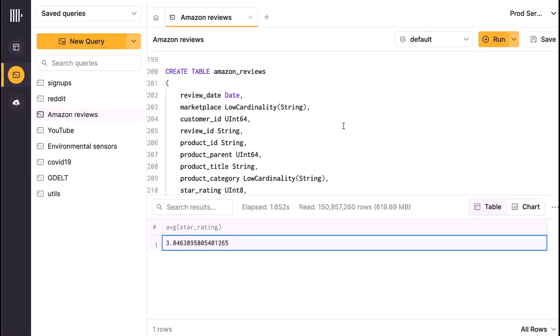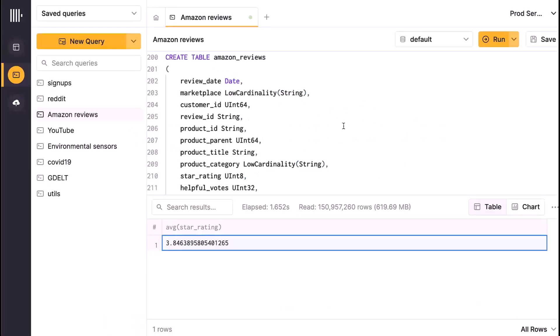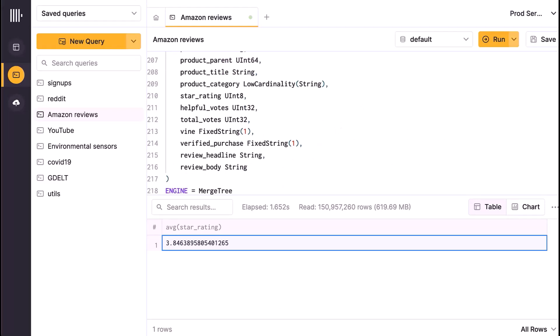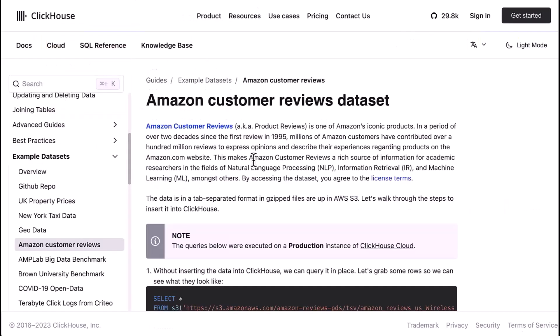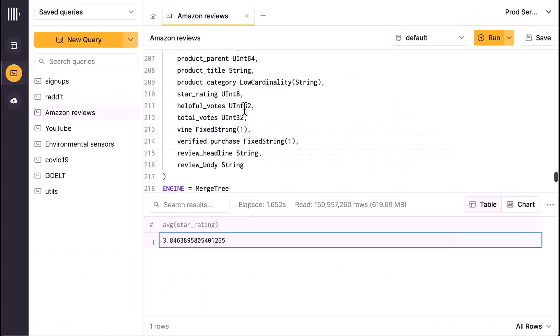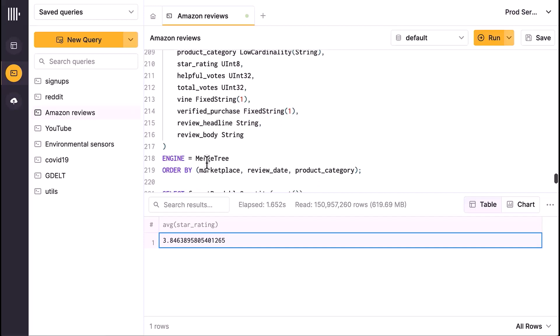So I'll show you a specific example. Here I have a table called Amazon reviews, and it's in the documentation if you want to download that dataset. It's about 150 million rows of actual product reviews from products sold on Amazon. You can see that it's a merge tree table, and for the primary key I picked marketplace, review_date, and product_category. The assumption being that a lot of my queries probably filter by review_date and/or product_category.